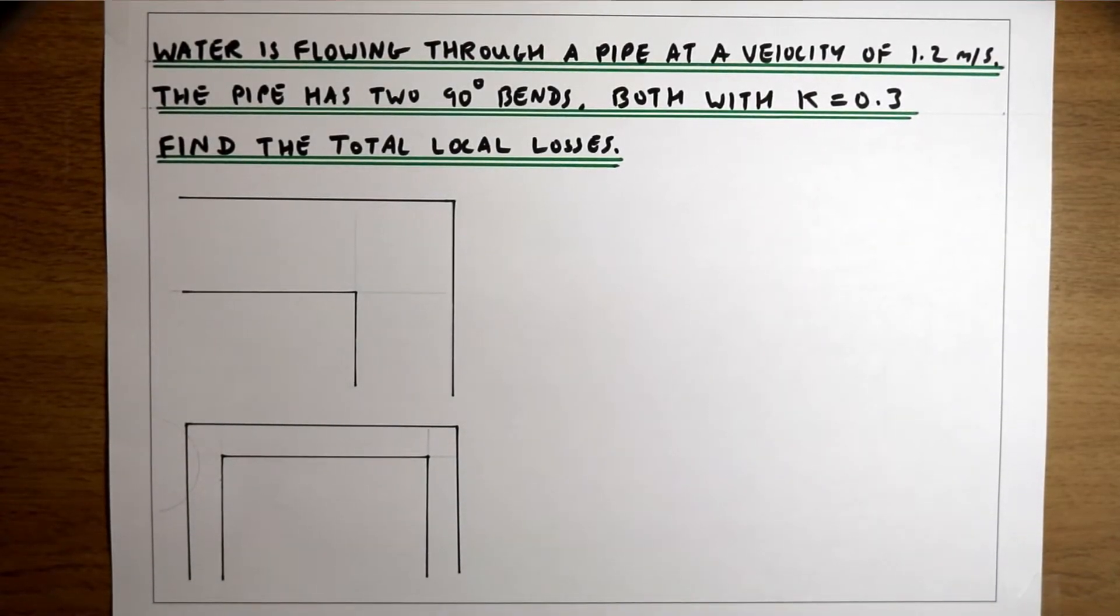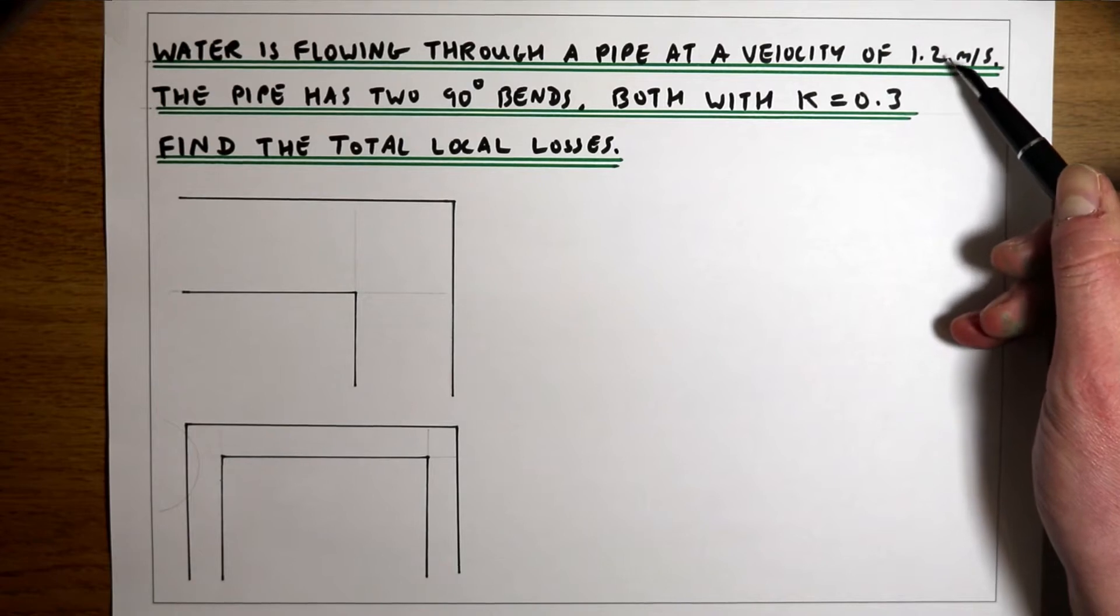In this example, we've got water flowing through a pipe, and that water is moving at a mean velocity of 1.2 metres per second.